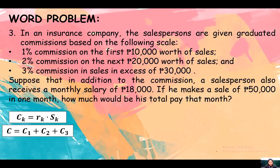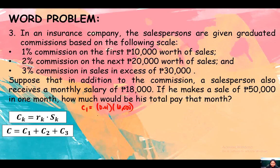He makes a sale of 50,000 in one month, so he surpassed the 1%, the 2%, and the 3% commission tiers. Let's get the three commissions. Commission 1: 0.01 times 10,000. Commission 2: 0.02 times 20,000. For the third commission, sales are in excess of 30,000, so 50,000 minus 30,000 equals 20,000.